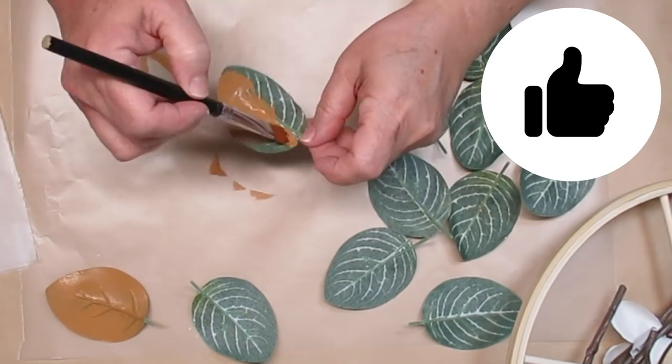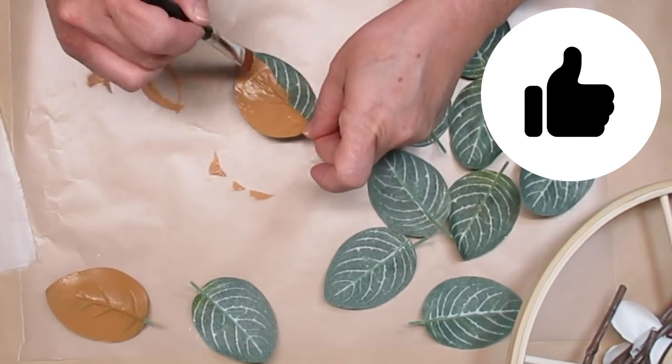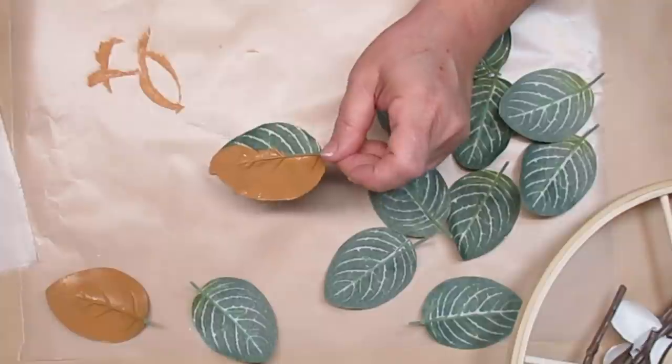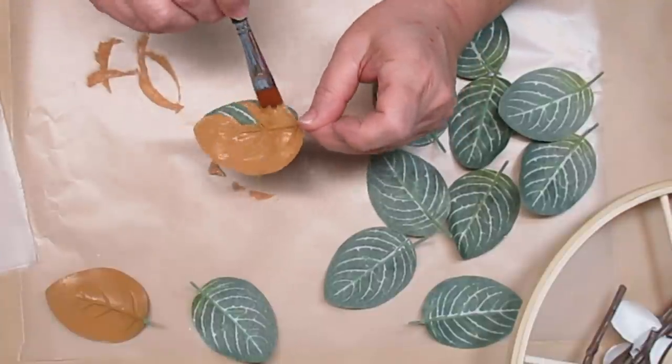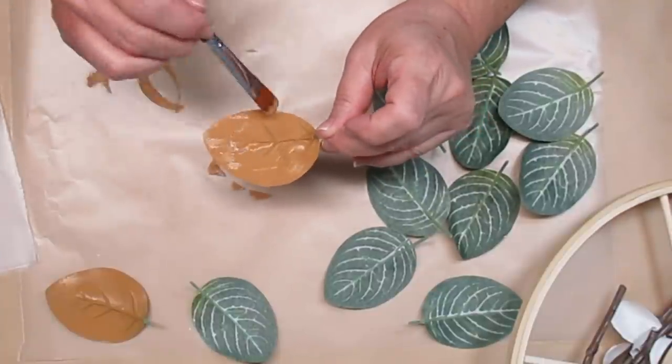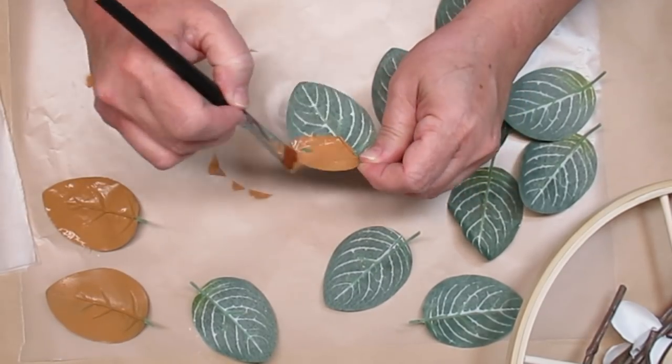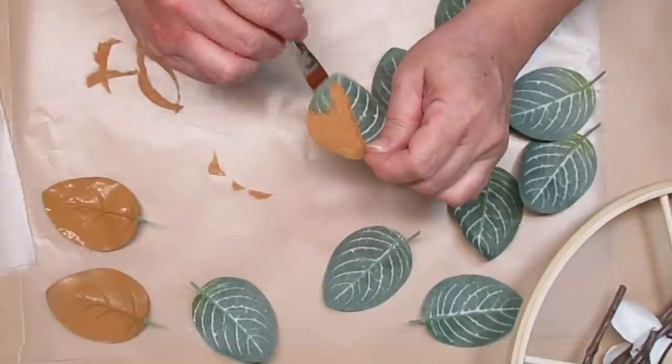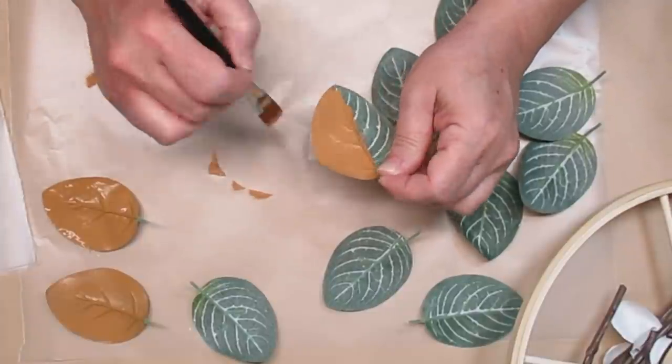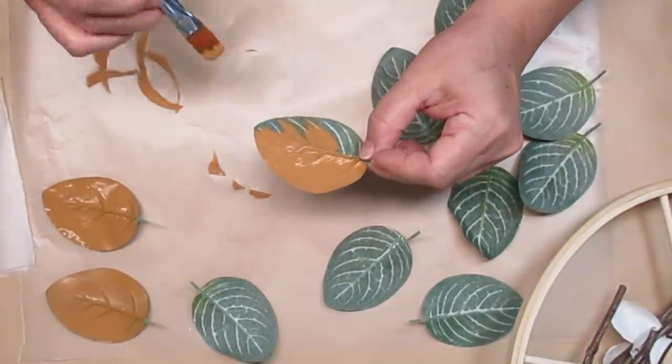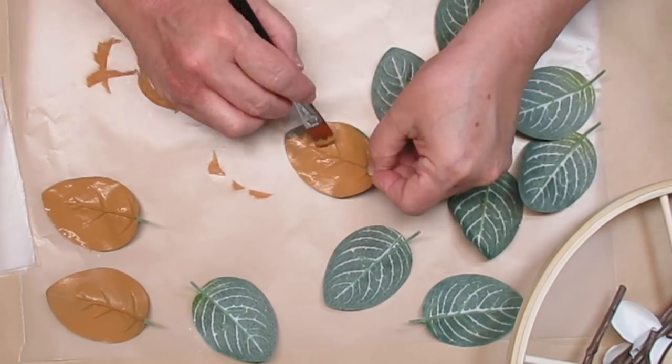I'm using these leaves that came off of a bush from the Dollar Tree and I'm going to paint them on the back side with my burnt orange paint. Now this is a honey brown color that comes from Americana and I think it's just the perfect color to mimic the underside of magnolia leaves. So each of these is going to get one good coat.